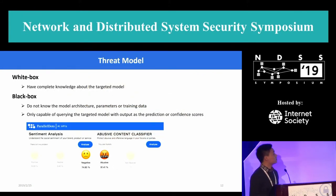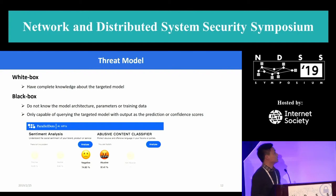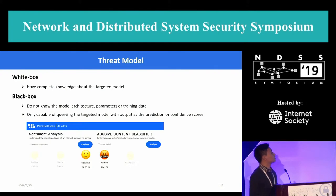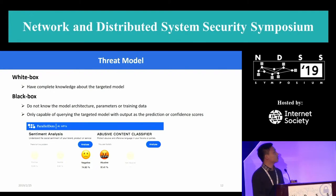In the white box scenario, since we have complete knowledge about the target model, we conduct an attack by using the gradient information. And in the black box scenario, we don't know the model architecture, parameters, or training data. We are only capable of querying the models with outputs as the predictions or confidence scores. So in this case, we conduct an attack by observing the change of confidence values after perturbations.